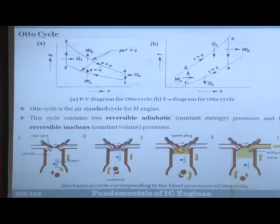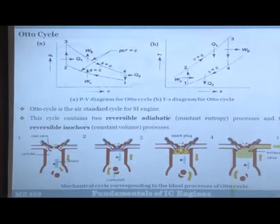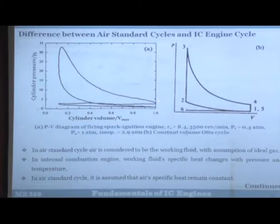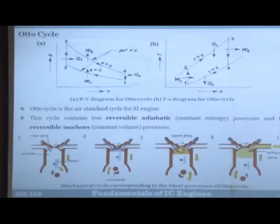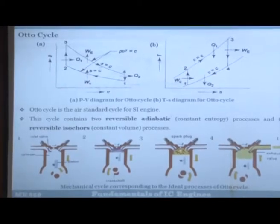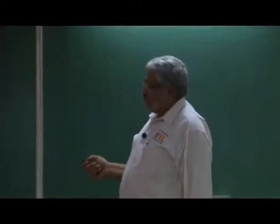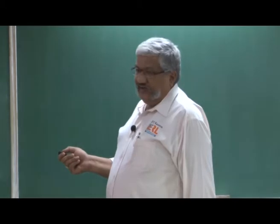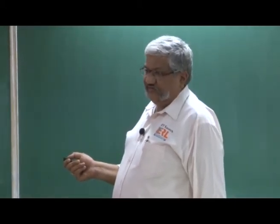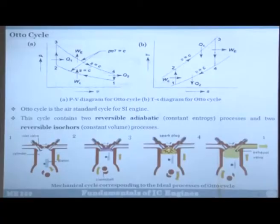For the Otto cycle analysis, intake and exhaust processes of intake and exhaust are not very significant because they are overlapping and have no area. When we say Otto cycle, it is sufficient to show only two strokes: the compression stroke and the expansion stroke. We also account for the exhaust blowdown process. This is what we want to analyze — any air standard cycle can be analyzed using two diagrams: the P-V diagram and the T-S diagram.